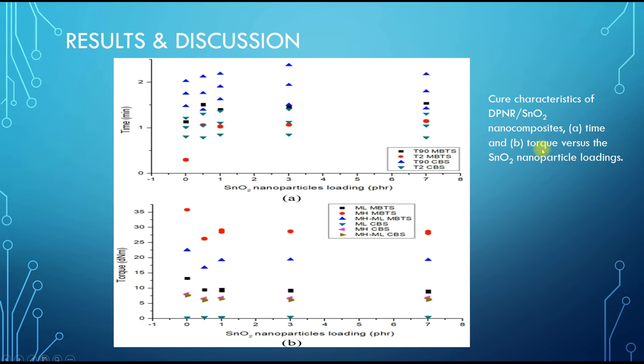From this first figure, it shows the effect of MBTS and CBS accelerator on the cure characteristics of DPNR tin dioxide nanocomposites. It shows that MBTS cures faster than the CBS system, but both system trends are similar when tin dioxide nanoparticles are added.